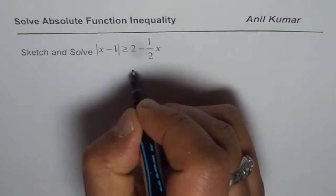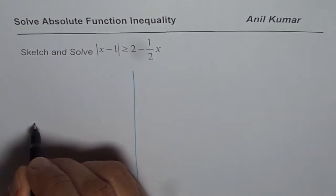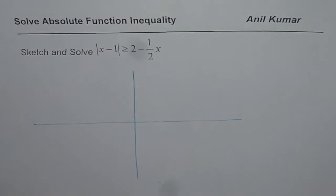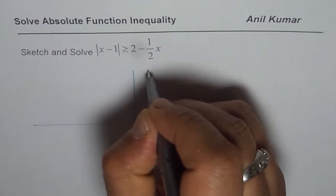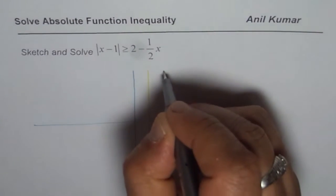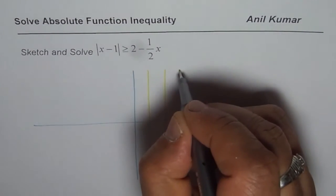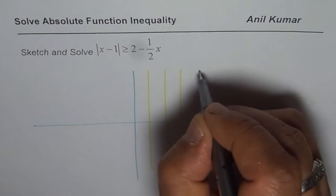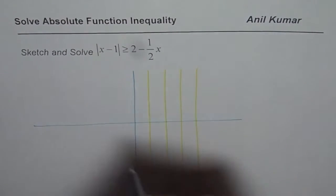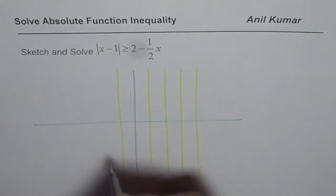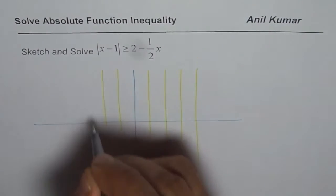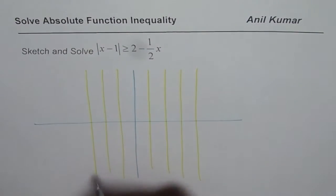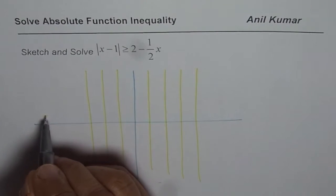Now we need to sketch and show, so what I'll do is, we didn't take any graph paper so I'll just sketch and make some lines. Let's say these are my vertical lines one unit away to the right side and these are on the left side.